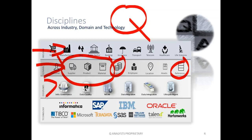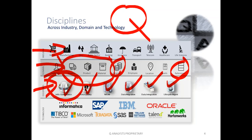In BI, the disciplines we care about include information governance, data quality, MDM (master data management), data migration, data integration, and lifecycle management. In talking to our clients every day, two things come out as highlights of the BI practice: information governance — it's a huge thing companies are struggling with — as well as data integration. Companies don't know how to deal with their data, who owns it, who's responsible for it, and data is coming at them so fast in so many ways.